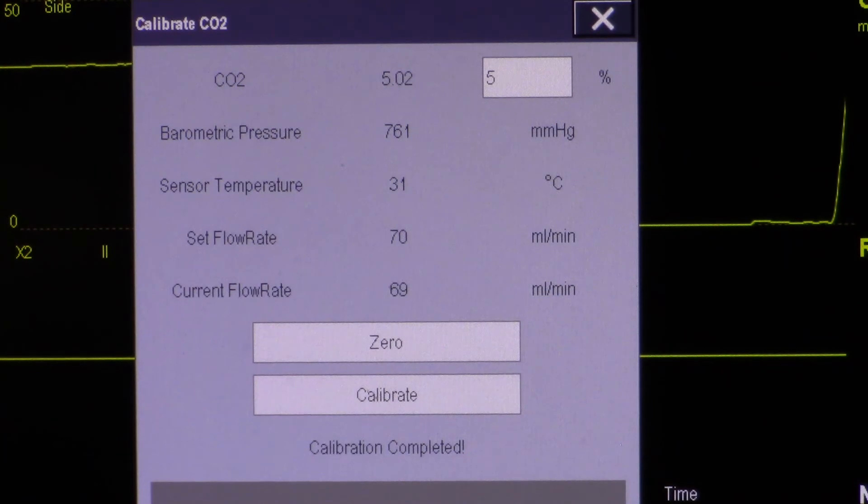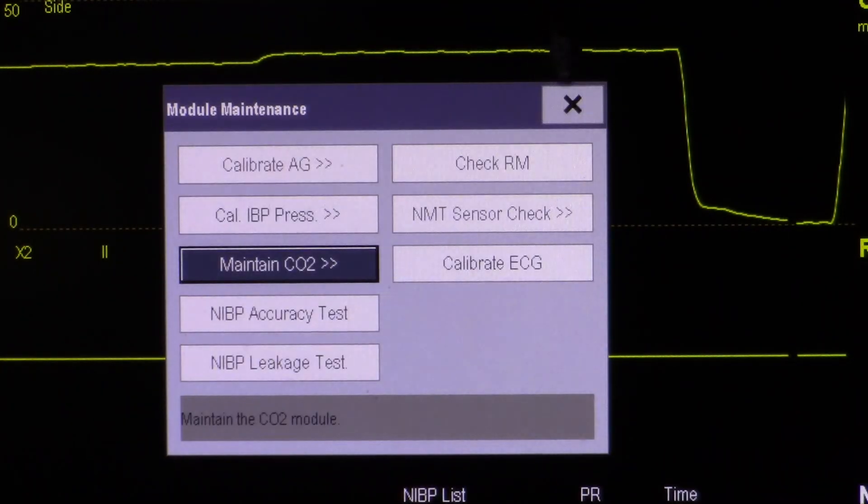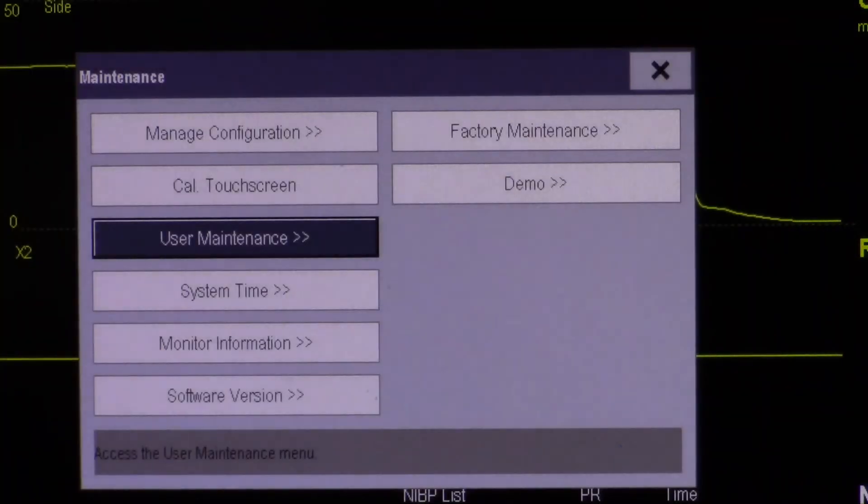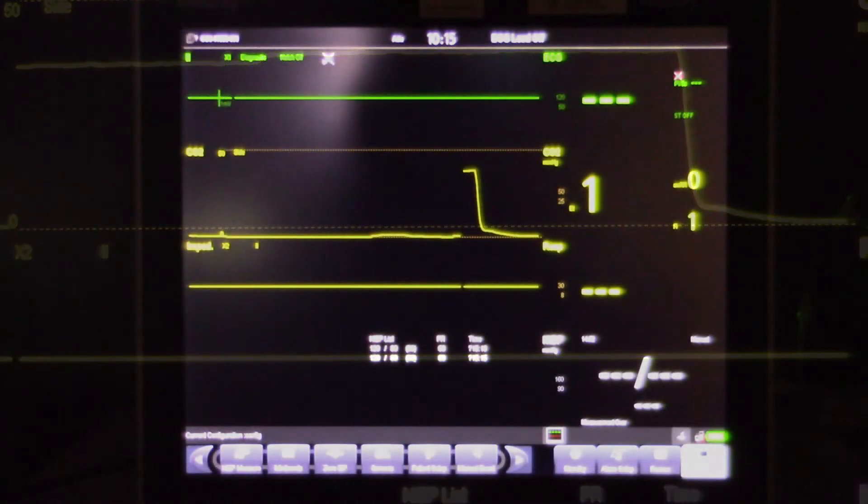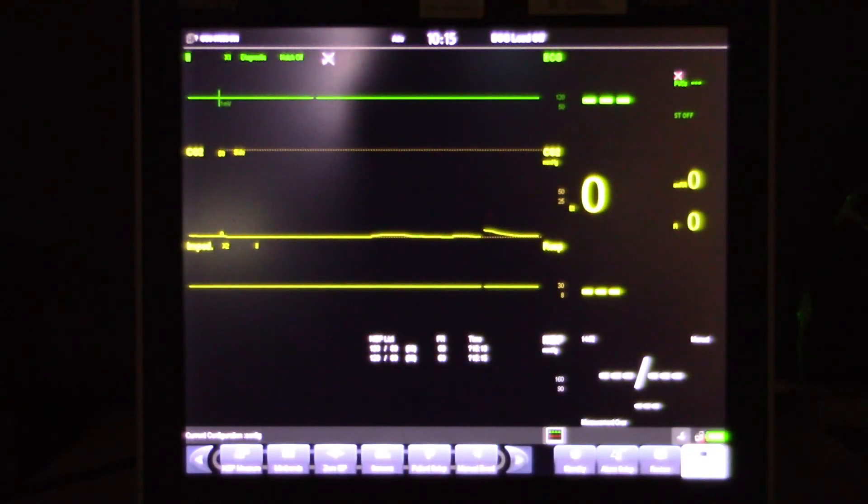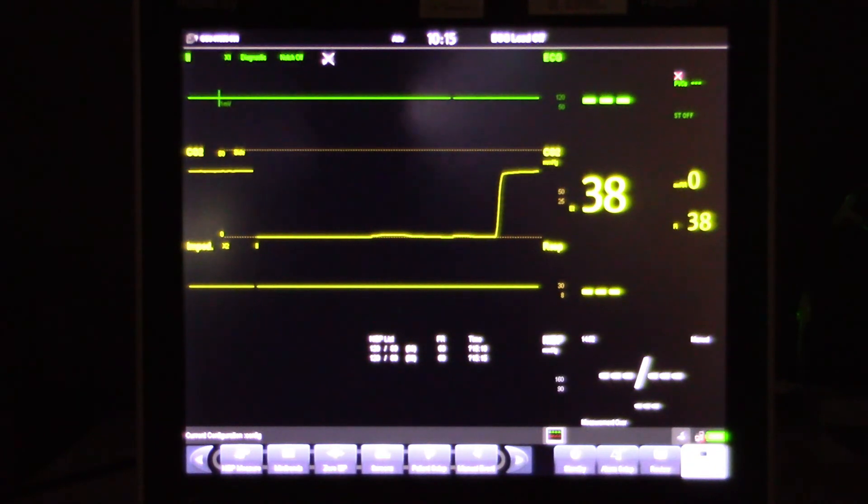Touch the X several times to close the windows and return to the main operating screen. In the normal operating mode, you can verify operational accuracy by applying the calibration gas again to confirm your reading is 38 plus or minus 2. Calibration was successful and accurate.